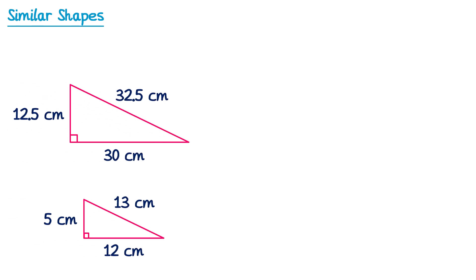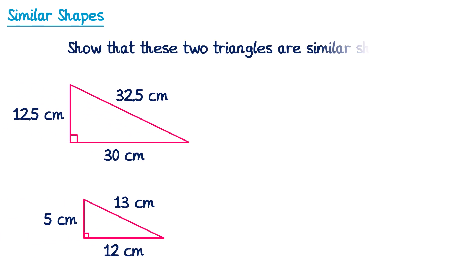Sometimes exam questions ask you to show that shapes are similar — or show they're not similar. If we take two triangles and the question says show that these triangles are similar, we need to show there's a scale factor of enlargement that applies to all pairs of sides. We have the hypotenuse at 32.5 and 13, the height at 12.5 and 5, and the base at 30 and 12.